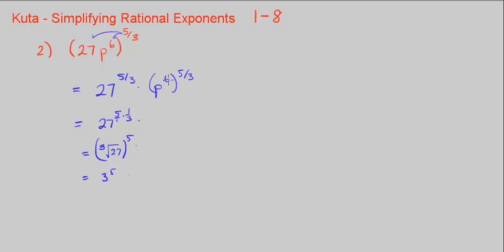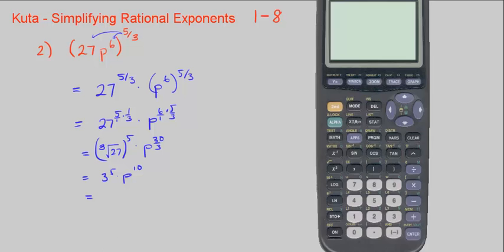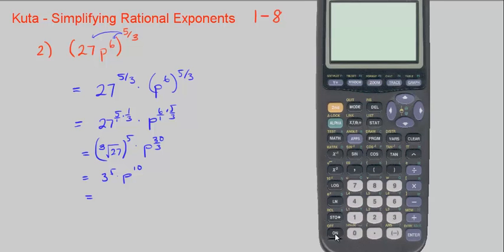p to the 6th to the 5 thirds means we multiply 6 times 5 thirds. 6 is over 1, so that's p to 30 over 3, which is p to the 10th. And 3 to the 5 is 3 times 3 times 3 times 3 times 3 — you could use your calculator. 3 to the 5th power is 243, and that's simplified.